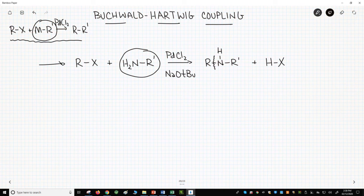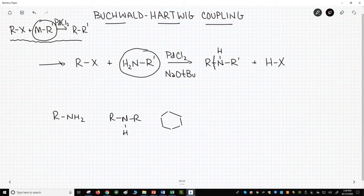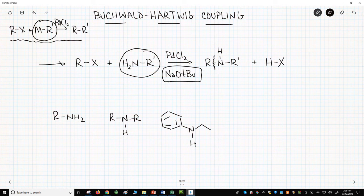The reaction is actually very general. The amine can be almost anything. One R-group, two R-groups are fine. The R-groups can be an aromatic ring or an alkyl chain. You do need a strong base in the reaction, and sodium t-butoxide is by far the most commonly used base.